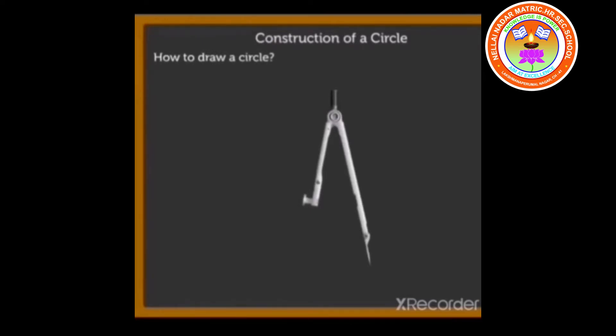A compass has two arms: a metal arm and a pencil arm, connected by a hinge.